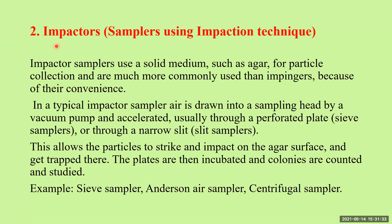Another type of active air sampler is the impactor. Impactor samplers use a solid medium like agar for particle collection and are much more commonly used than impingers because of their convenience. In a typical impactor sampler, air is drawn into a sampling head by a vacuum pump and that volume of air is accelerated through a perforated plate — also called a sieve sampler — or through a narrow slit, called a slit sampler.